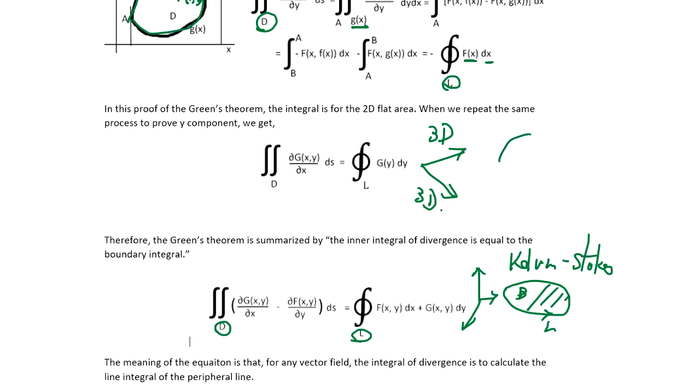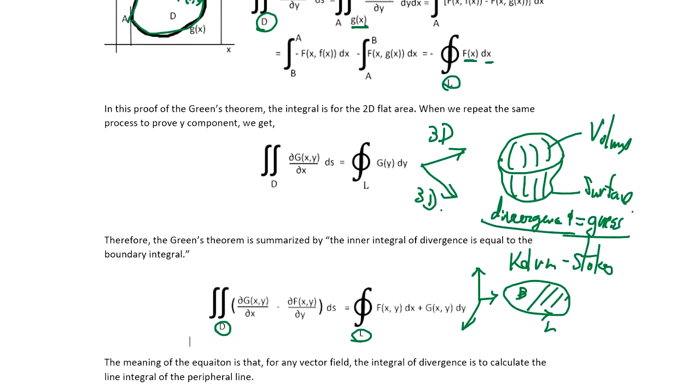But if you expand 3D into 3D object and make a relation between volume and the surface, that's going to be Divergence Theorem. Now Divergence Theorem is also known as Gauss Theorem. So you can expand into 3D version in two different ways.